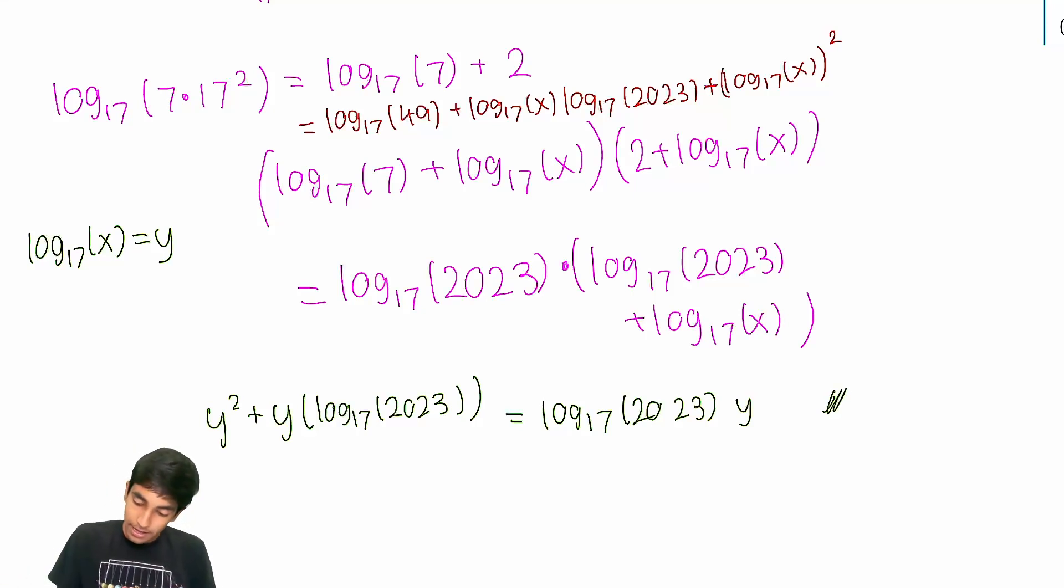So log₁₇(2023) times log₁₇(2023), constant, don't care. And then we have log₁₇(2023) times log₁₇(x), which is just y. And now we subtract that same thing from both sides.